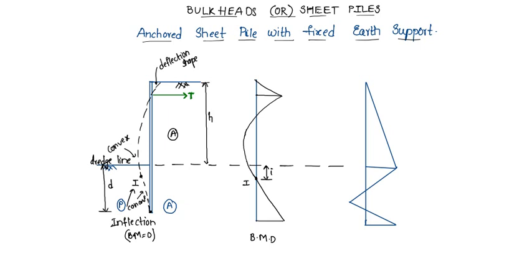The pressure distribution shows that up to the dredge line it is active, so Ka times gamma times h, where h is the height. At a distance, there is the O1 line at distance O, and the remaining distance is b, which is equal to d minus a, since the total distance is d.